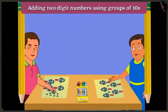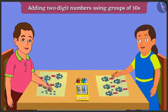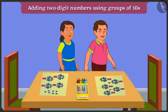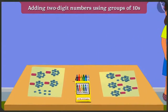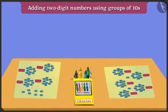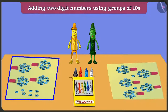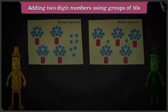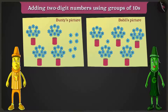Look, Bunty and Bubbly are drawing pictures. It looks like they are going to the park to play. The green crayon and the yellow crayon are looking at the pictures made by Bunty and Bubbly. Let us hear what they are talking about. Greeny, Bunty and Bubbly have drawn paper-made flower pots with ten flowers each, and yes, there are some loose flowers too.